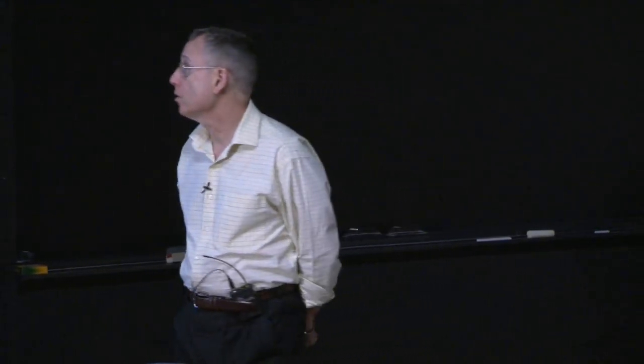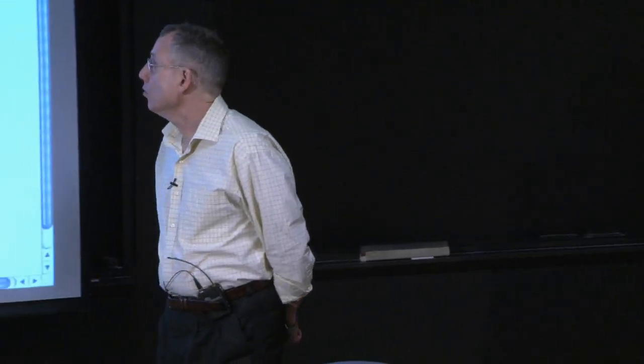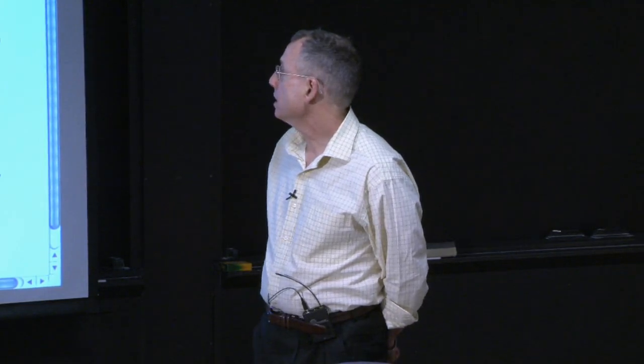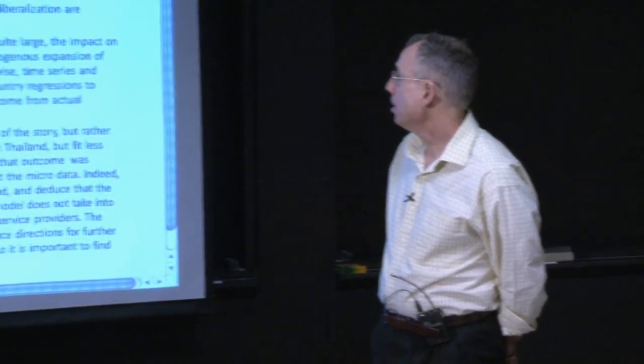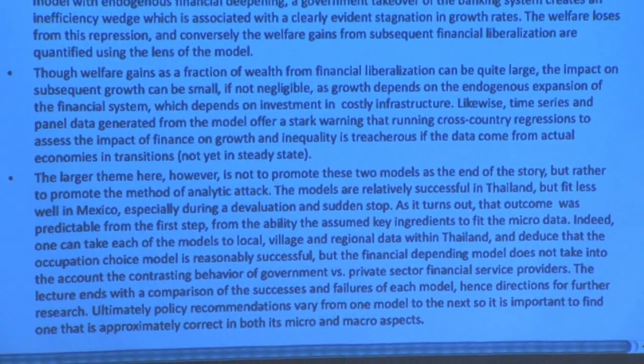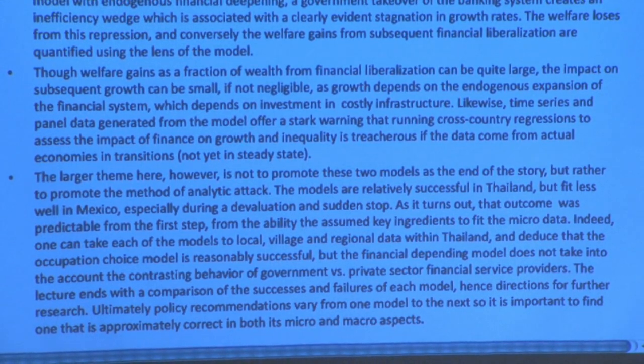A better way to say it is a rising tide raises all boats. The model takes a stand on these things. In particular, the wage, when you have financial deepening, can go up — and that is an enormous benefit to poor people, even unskilled poor people, who have better employment and better wage opportunities. The second welfare experiment is when, in the second model, the government takes over the banking system.